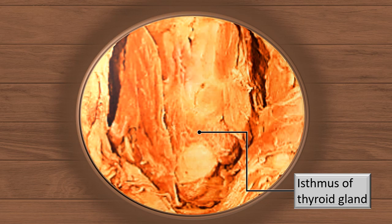Let's take a quick recap: symphysis menti, mylohyoid raphe or the central line, hyoid bone, thyrohyoid membrane and ligament, thyroid cartilage, then cricothyroid membrane, then cricoid cartilage. And now, below the cricoid cartilage, we reach the isthmus of the thyroid gland.